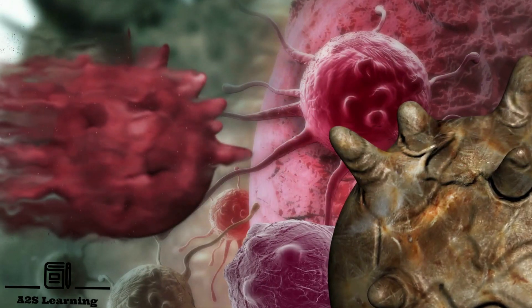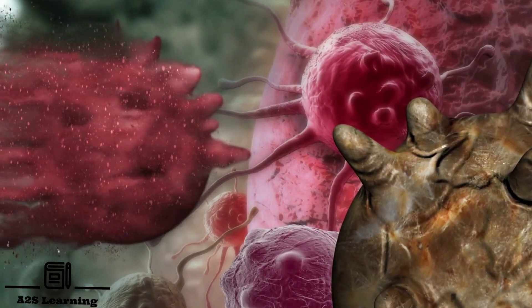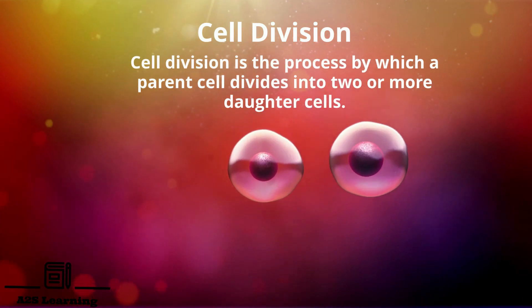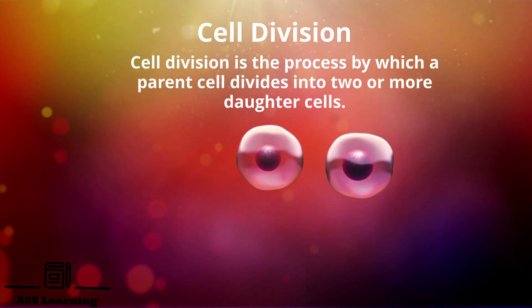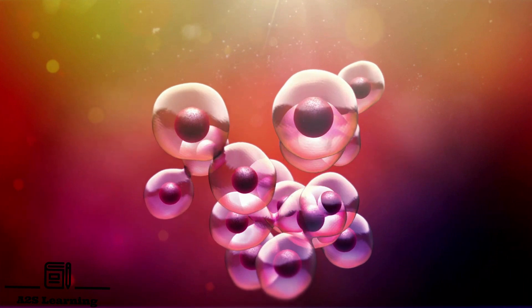As cells become damaged, diseased or aged, they need to be replaced by new cells. New cells are formed by cell division. Cell division is the process by which a parent cell divides into two or more daughter cells. These daughter cells can further divide by themselves which gives rise to a new cell population.